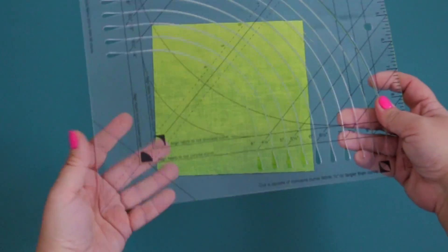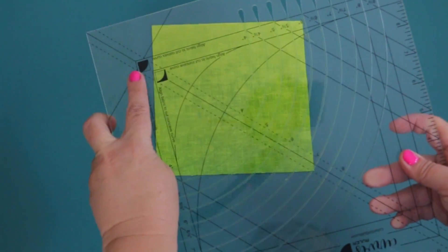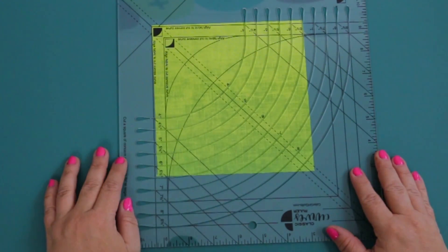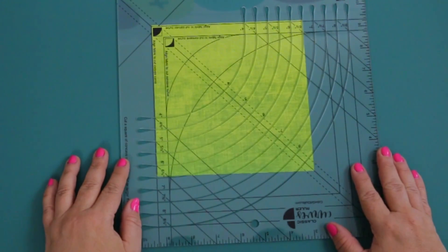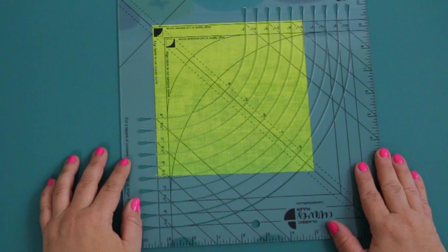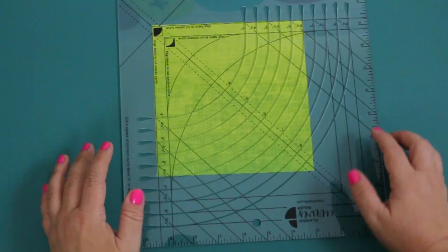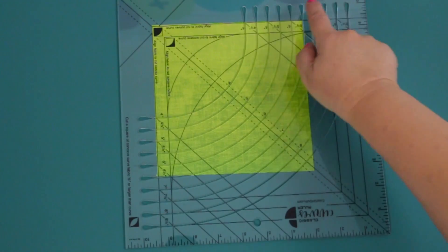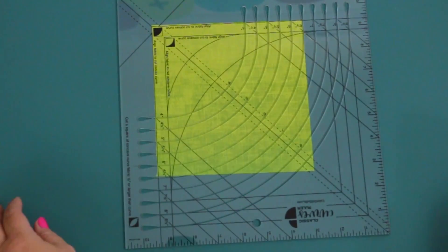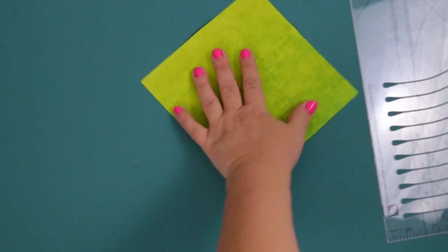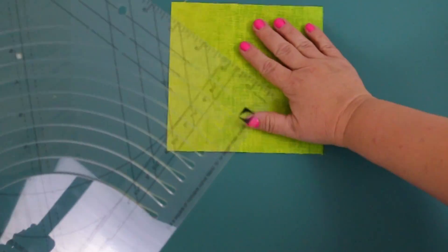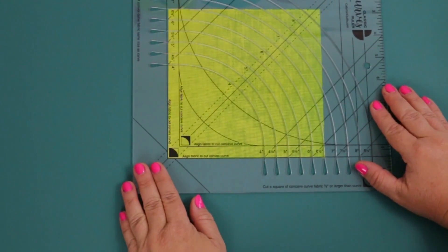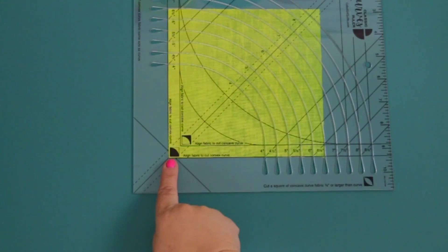Next, go ahead and align one corner of the fabric with the right angle on the ruler next to the convex curve symbol. You'll notice that because we have the same size square as the curve we want to create, the curve lines up with the two raw edges. And you're going to want to just adjust your ruler so that it's comfortable for you to cut because the next thing you're going to cut is that 6-1/2-inch curve.